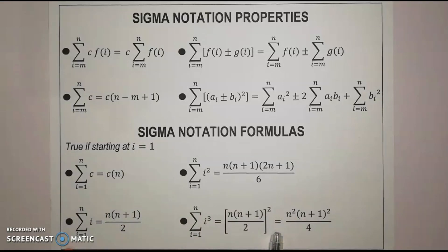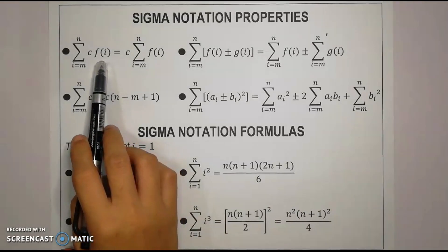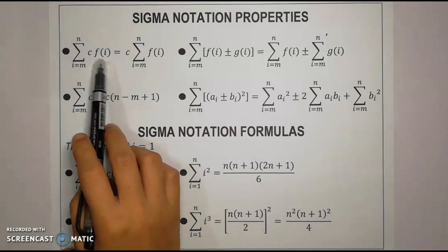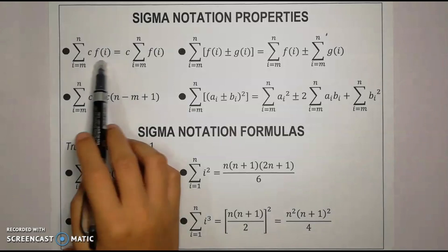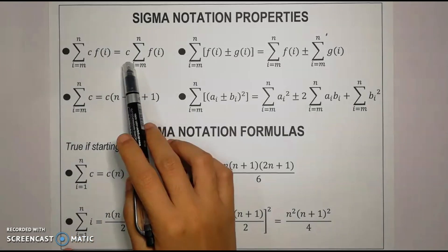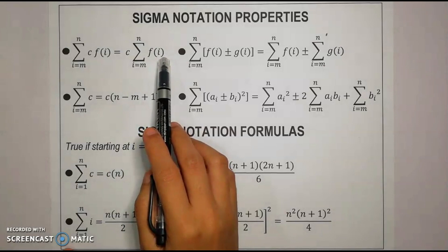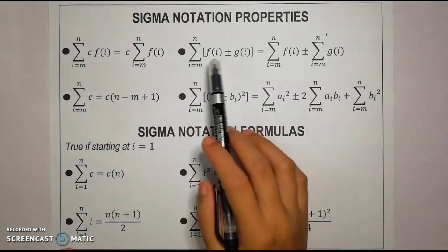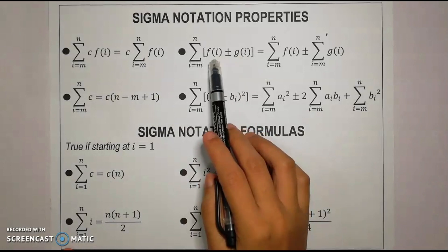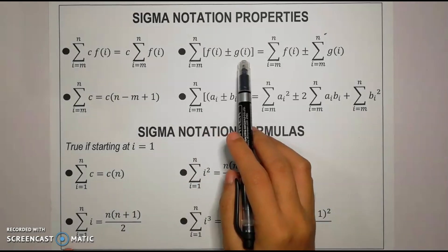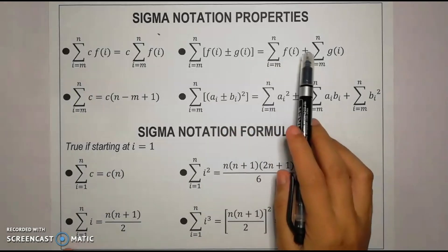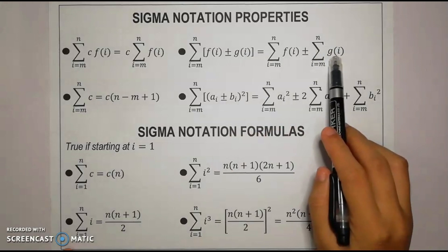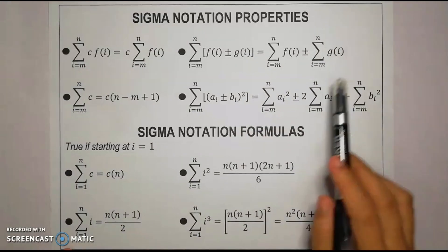Let's discuss this briefly. For the first property, if a certain variable f(i) has a coefficient c other than 1, and we need to get its sum, we need to pull out c first and then solve for the summation of f(i) from m to n. If we have two functions or two terms, f(i) and g(i), and we need to get the sum from m to n, we can distribute the summation for each term and then add or subtract them afterwards.